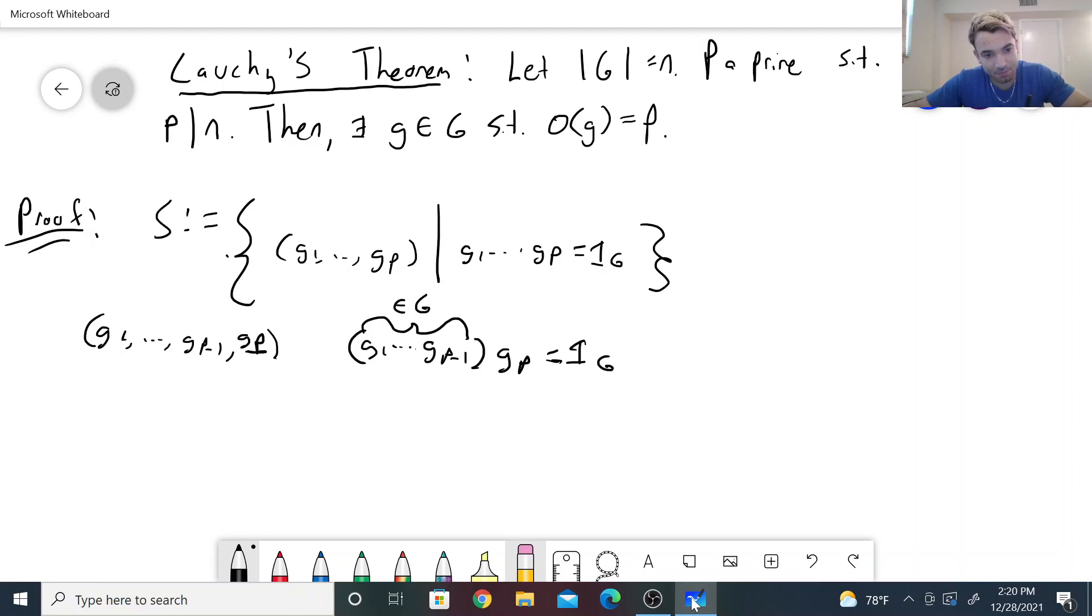So g_p would be uniquely determined in this case to be the identity. And similarly, if you have an element from the set S, say (g_1, ..., g_p), we know that the product is the identity. But by the associativity property, we know that we can associate it this way so that g_p is indeed the inverse of this element here. So what does that mean? That means that we can arbitrarily pick the first p-1 slots and it uniquely determines the last slot. Any element of S will be of that form.